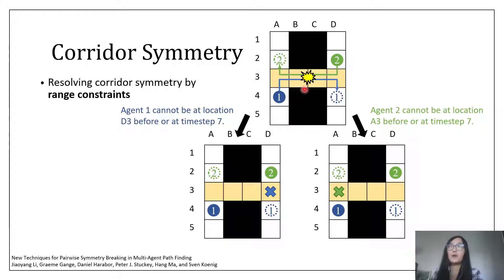And same for agent 2. Therefore, we can branch this node by saying either agent 1 cannot be at location D3 at or before time step 7, or agent 2 cannot be at location A3 at or before time step 7. In each case, when we replan the paths, we can find collision-free paths immediately. Also, we can prove in theory that this pair of constraints preserves the optimality of CBS. We call these constraints range constraints.